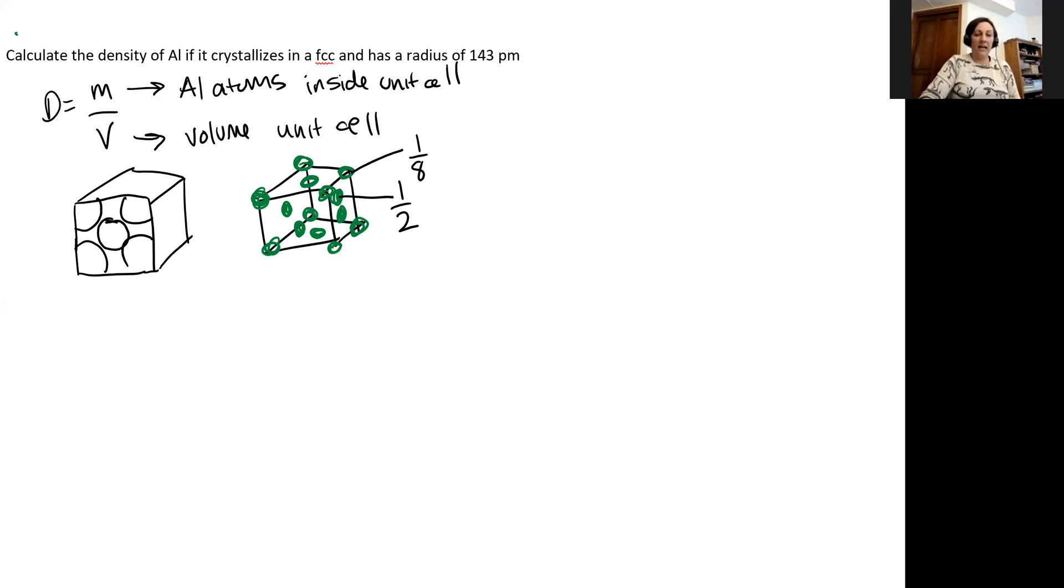So I'll have four lattice points on the top and four on the bottom for my corners. So I'll have eight corners, and each of those will be an eighth of an atom. So I'll have one atom. And then I'll have six faces that each have half of an atom. So it'll be three atoms. That'll give me a total of four aluminum atoms inside of my unit cell.